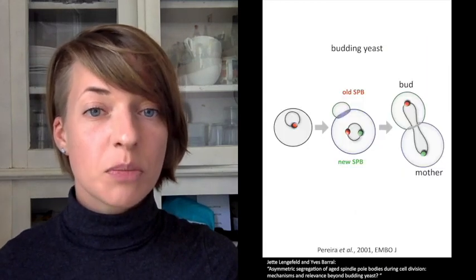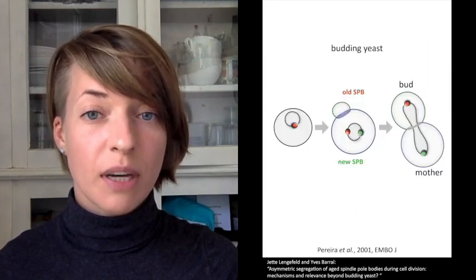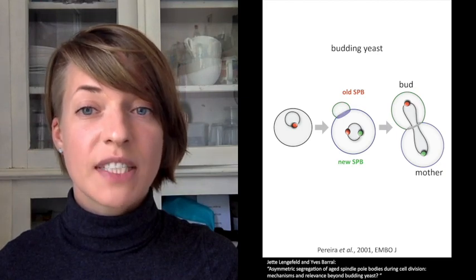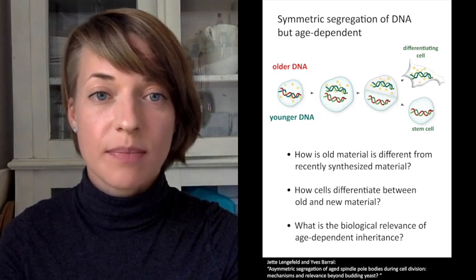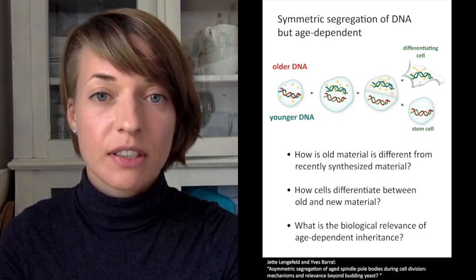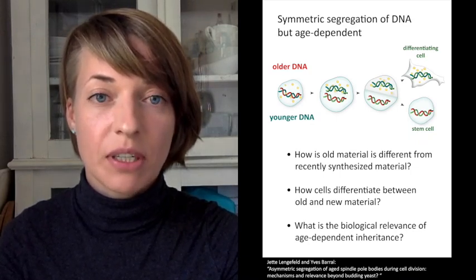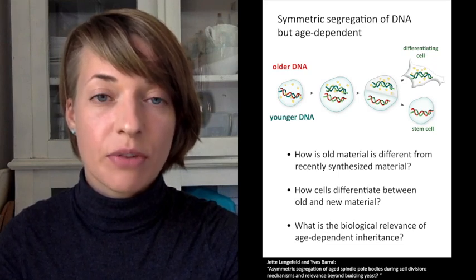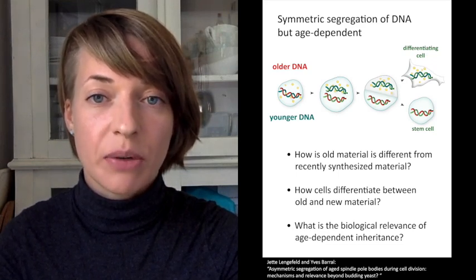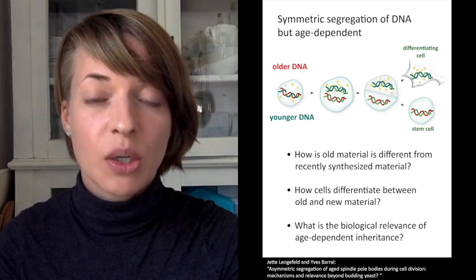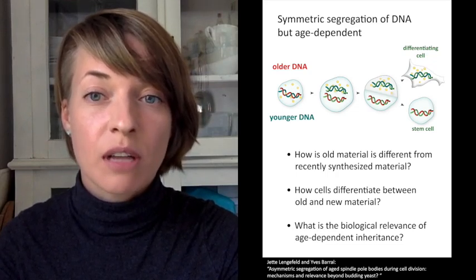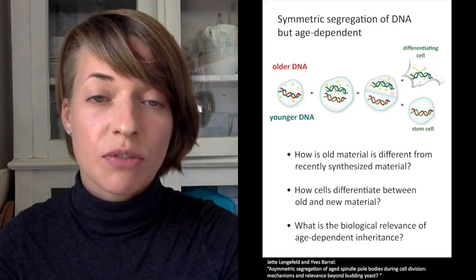In budding yeast, the old spindle body partitions into the bud and the new one remains in the mother cell. These observations open the following questions. How is old material different from recently synthesized material? How do cells differentiate between the old and new material? What is the biological relevance of segregating old and new material away from each other and to different daughter cells?